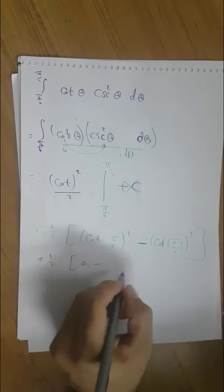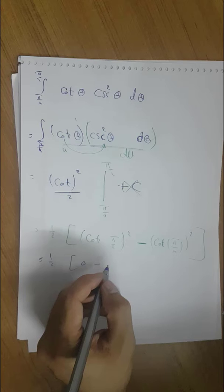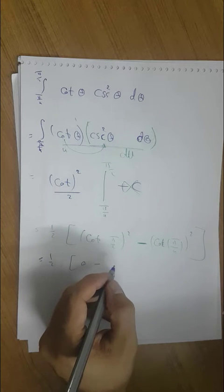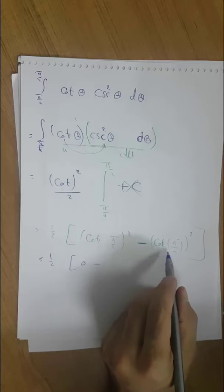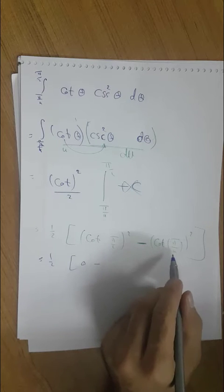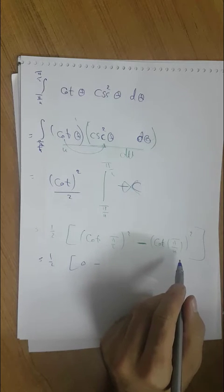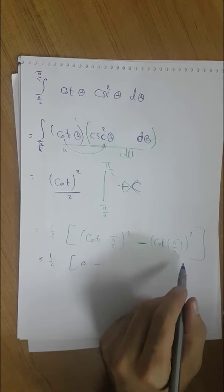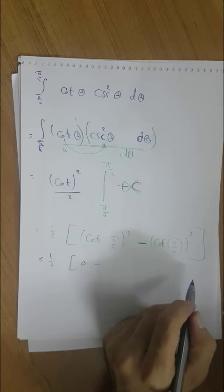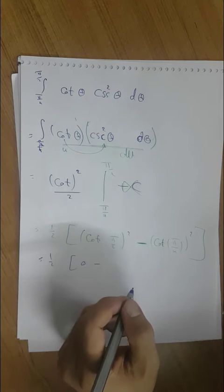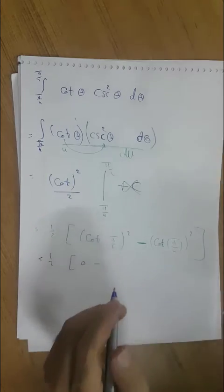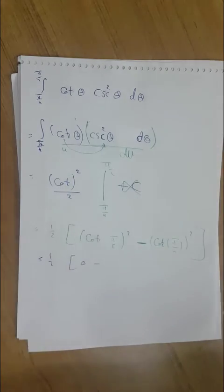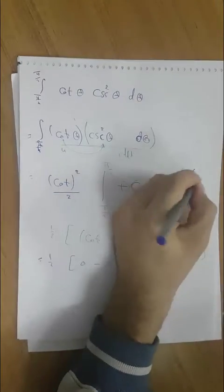This equals one-half times zero, minus — cotangent of pi over 4 equals minus one — so the result equals minus one half. Let me verify using the table. The last things here in this section.